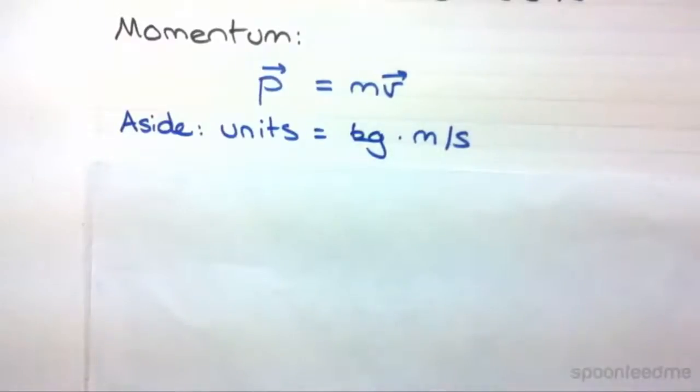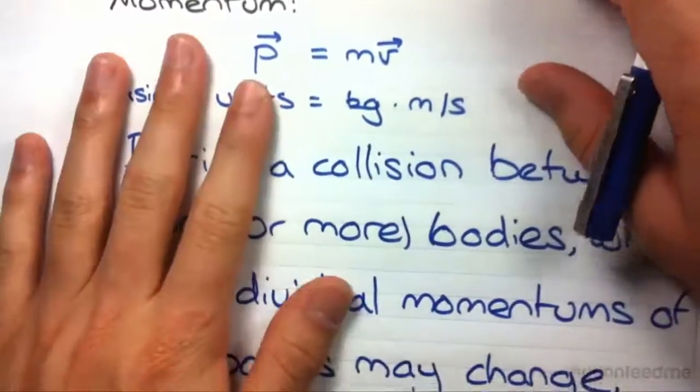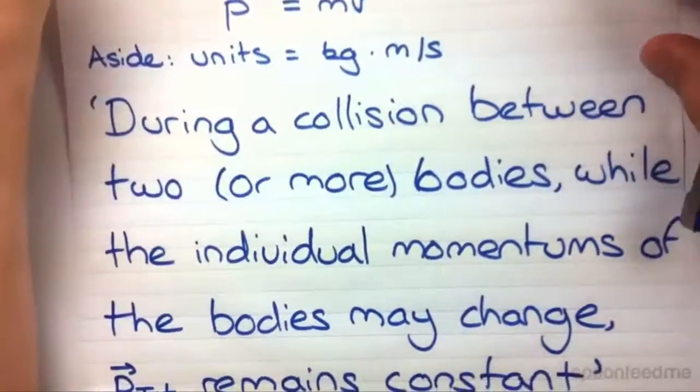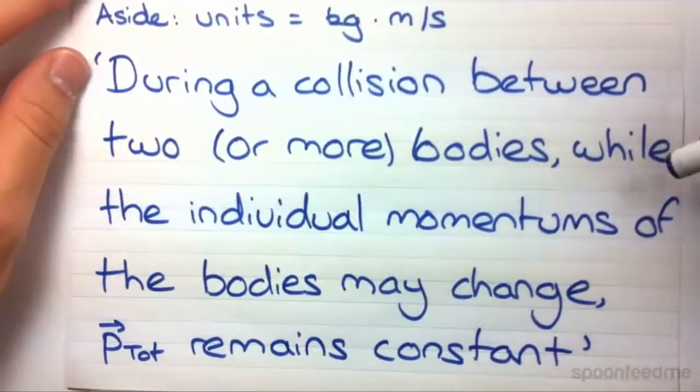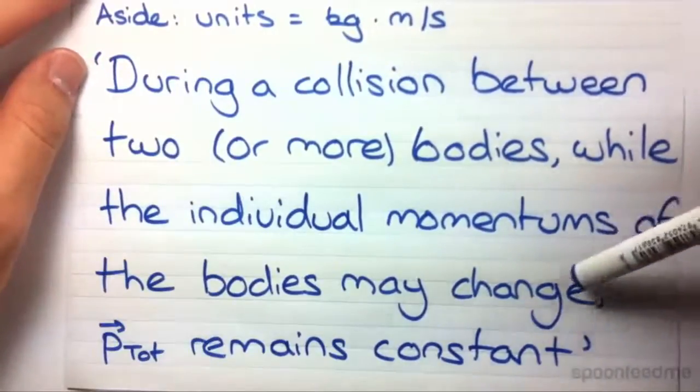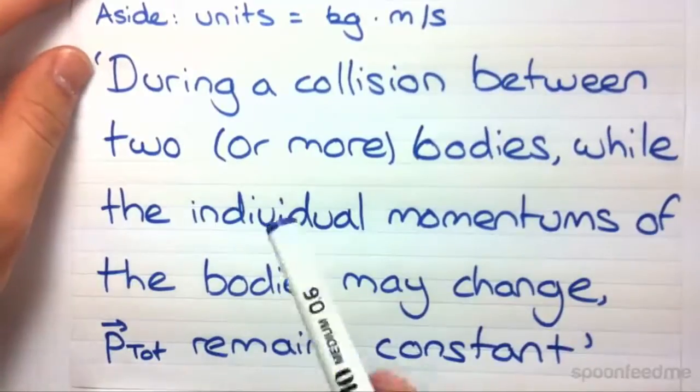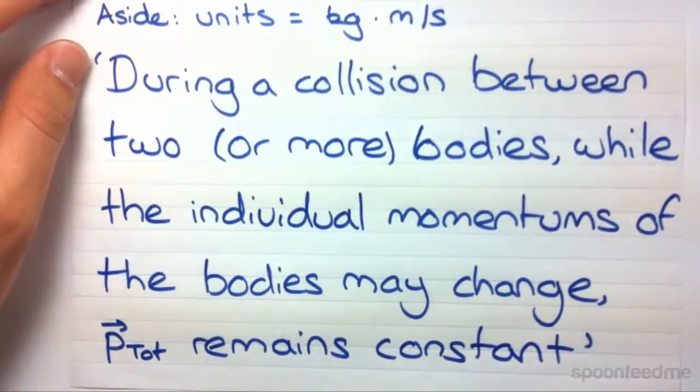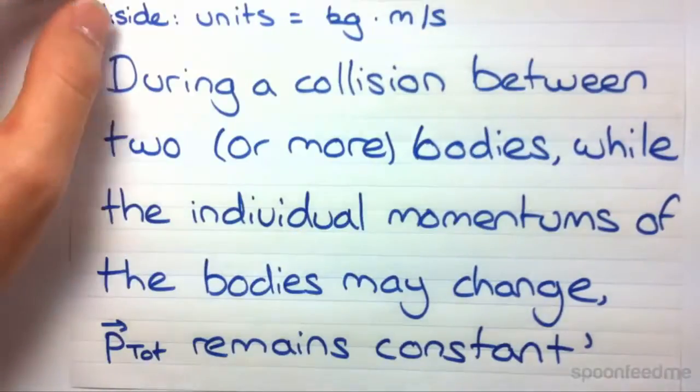Now on to solving collision problems, we need this sentence: During a collision between two or more bodies, while the individual momentums of the bodies may change, the total momentum remains constant. So the sum of the two momentums of the two bodies before will equal the sum of the momentums of the two bodies afterwards.